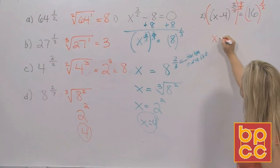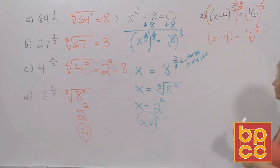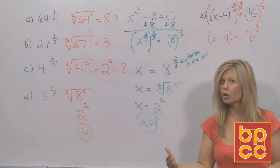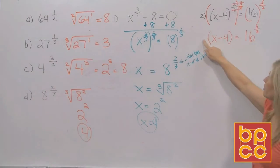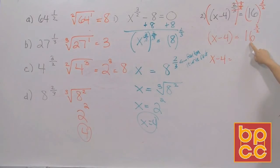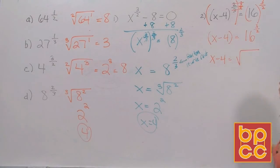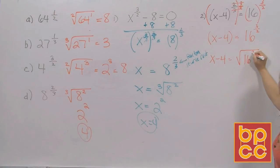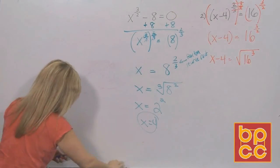Two-thirds and three-halves multiply to six-sixths, which is 1, so they cancel, leaving x minus 4. On the right side you have 16 to the three-halves. We're not done — drop the unnecessary parentheses on the left since the exponent is 1. On the right, rewrite 16 to the three-halves as a root. The denominator is 2, so this is the square root of 16, with exponent 3.